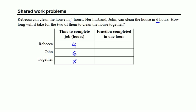Now for the time to complete job, getting from that to the fraction completed in one hour, we would say if Rebecca takes four hours to clean the house, then that presumably means that in one hour she has cleaned about one-fourth of the house or completed one-fourth of the job, at least measuring in terms of time. John would complete one-sixth of the job in one hour. And following this pattern, we can see that one over x represents the amount of the job, the fraction of the job, that the two of them would complete working together in one hour.